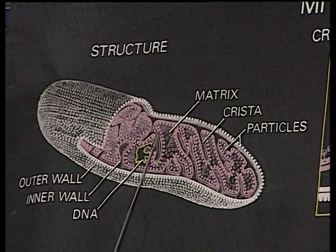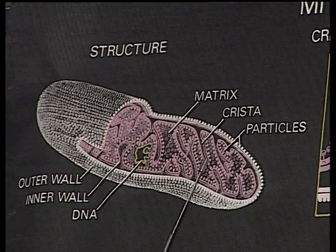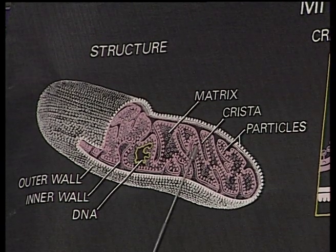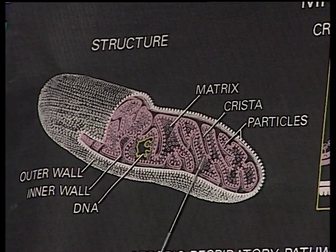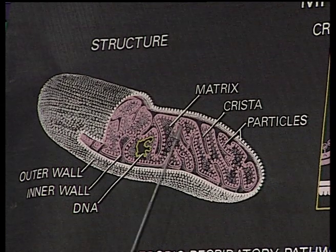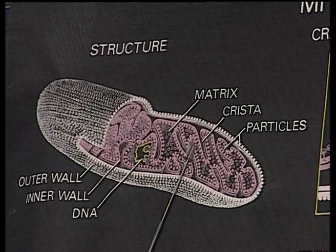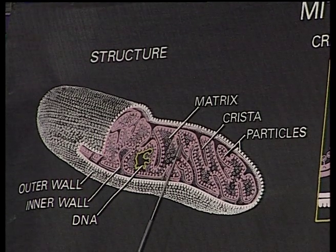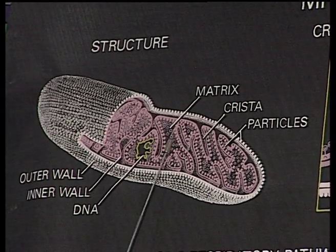The inner membrane also sends some finger-like processes into the lumen of the mitochondria, and these are known as cristae. These septa are not continuous, hence they do not divide the matrix into different chambers. Because of the presence of this membrane, the mitochondria is divided into two chambers: the outer chamber, between the outer and inner membranes, and the inner chamber, covered by the inner membrane, which we have already called the matrix.